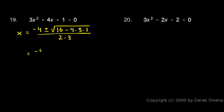So that will be negative 4 plus or minus the square root of what we have up here: 16 minus 12. 16 minus 12 is 4, so we have the square root of 4 over 6. Negative 4 plus or minus the square root of 4 over 6. And the square root of 4, of course, we recognize is 2.